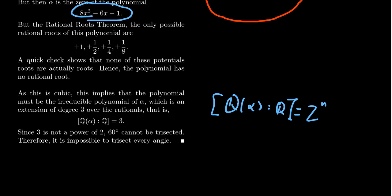3 is not a power of 2. Therefore, this cannot be a constructible extension. Therefore, the cosine of 20 degrees is not a constructible number. Therefore, a 20 degree angle is not constructible. And that shows you that a 60 degree angle is then impossible to trisect using a compass and straight edge alone.